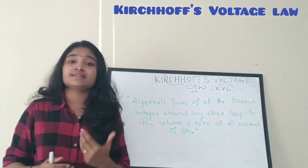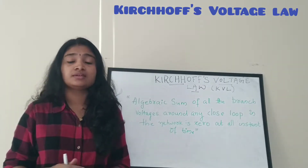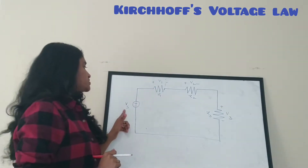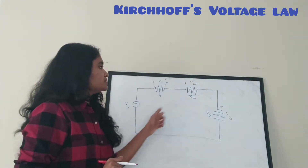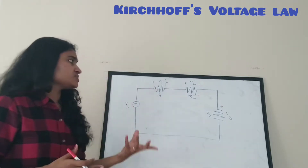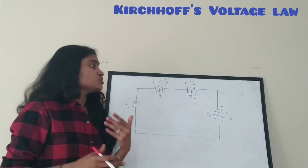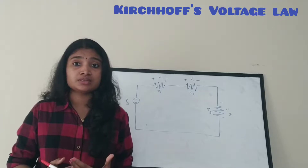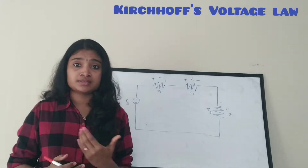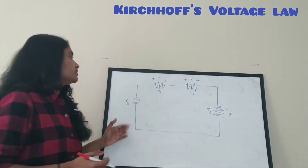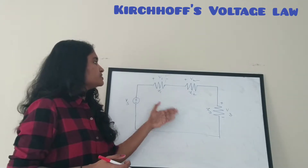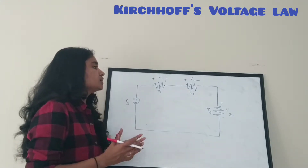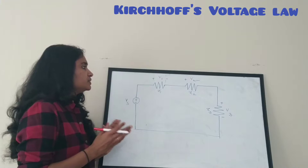Let us examine how this law is applicable in network analysis. Let's see how Kirchhoff's voltage law is applicable for this closed loop. This loop consists of a voltage source Vs and three impedances with values Z1, Z2, and Z3. These can be anything — a resistor, inductance, or capacitor. The voltages across the elements are V1, V2, and V3, and there is a voltage source Vs.